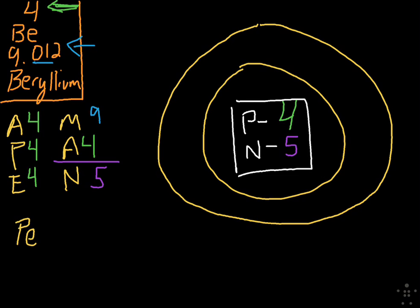Well, one of the things I want you to know is, if you know what period number, which is the side-to-side rows on the periodic table, if you know the period number of the element you're drawing, you know how many energy levels, that's what these things are called, energy levels, it has. This beryllium happens to have two energy levels, because it's in period 2.